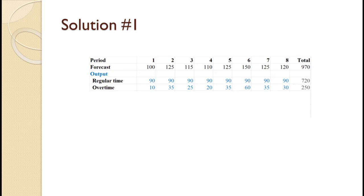We produce 90 times 8 equals 720 in regular time. We produce 10 plus 35 plus 25 plus 20 plus 35 plus 60 plus 35 plus 30 equals 250 in overtime. While not shown, 720 plus 250 equals 970, so production equals demand. This will always be the case with a chase strategy and no beginning inventory.